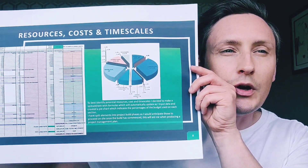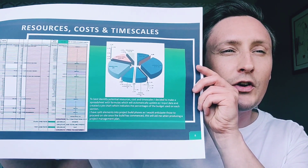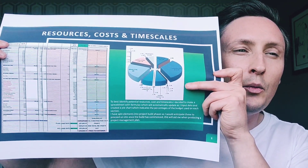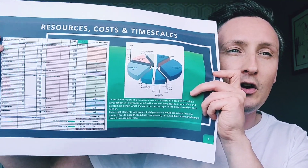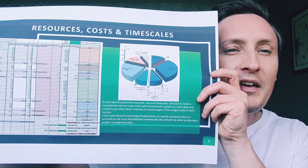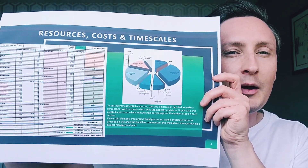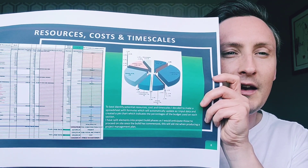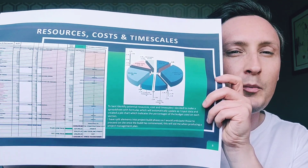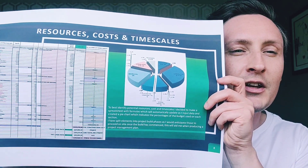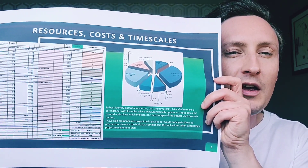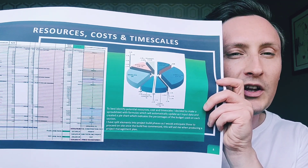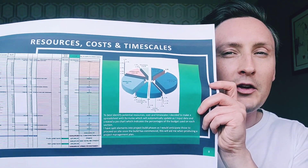The next thing I did was to identify resources, costs and timescales. I produced a spreadsheet and a pie chart which takes into account the elements of timescales and costs. To best identify potential resources costs and timescales, I made a spreadsheet with formulas which will automatically update as I input data, and created a pie chart which indicates the percentage of the budget used on each section. I split elements into project build phases as I would anticipate those to proceed on site once the build has commenced. This will aid me when producing a project management plan.